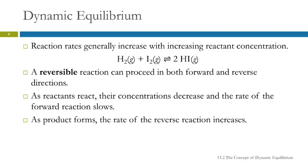Dynamic equilibrium. We understand reaction rates generally increase with increasing reactant concentration. If we look at this reaction, we've got hydrogen and iodine reacting and they're forming hydrogen iodide. The forward reaction will be faster if the hydrogen concentration and or the iodine concentration is higher. A reversible reaction like this can proceed in both the forward and the reverse directions.